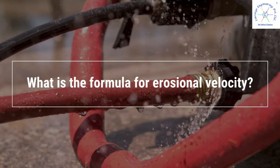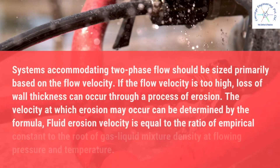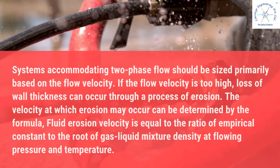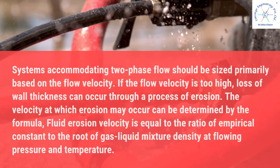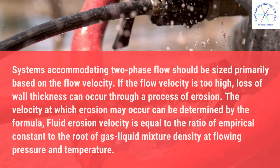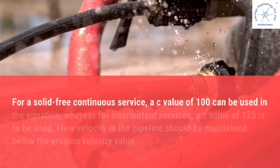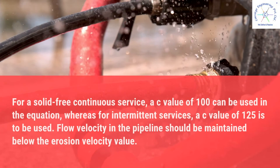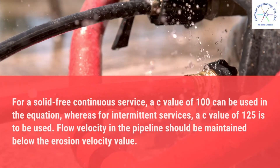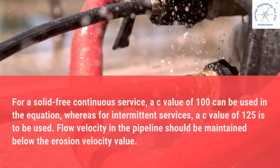What is the formula for erosional velocity? Systems accommodating two-phase flow should be sized primarily based on flow velocity. If the flow velocity is too high, loss of wall thickness can occur through erosion. The velocity at which erosion may occur is determined by the formula: fluid erosion velocity equals the empirical constant divided by the square root of the gas-liquid mixture density at flowing pressure and temperature. For solid-free continuous service, an AC value of 100 is used; for intermittent services, an AC value of 125 is used. Flow velocity in the pipeline should be maintained below the erosion velocity value.